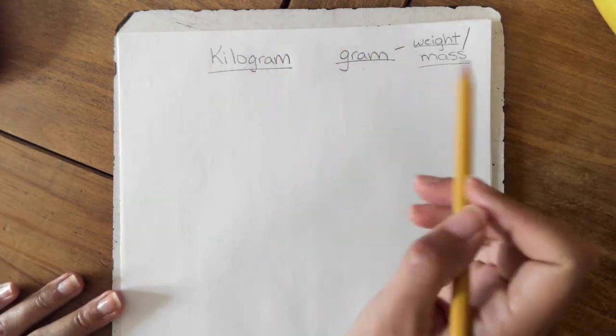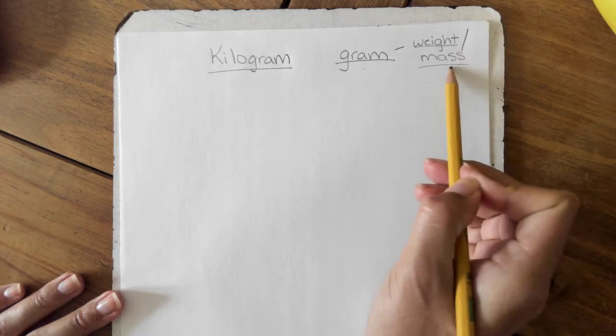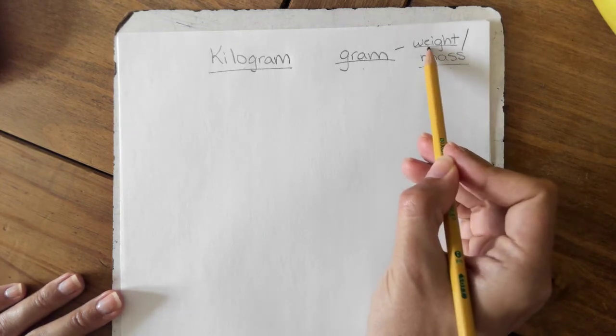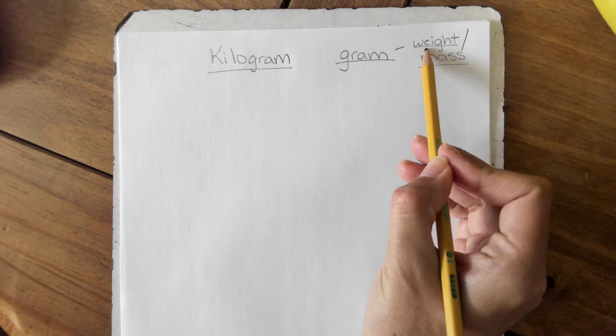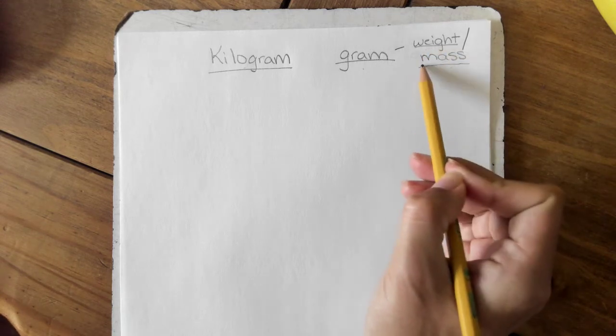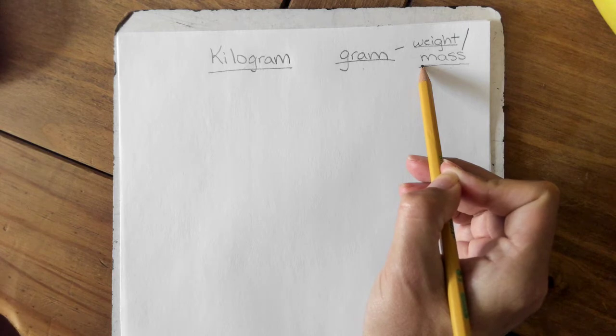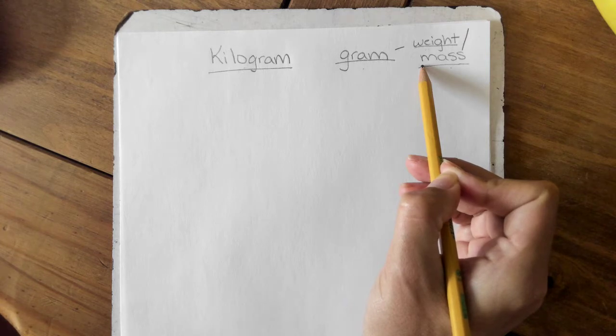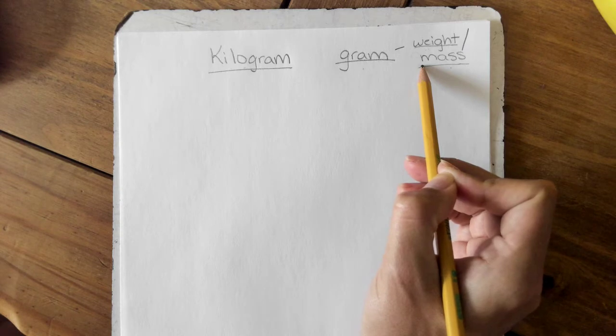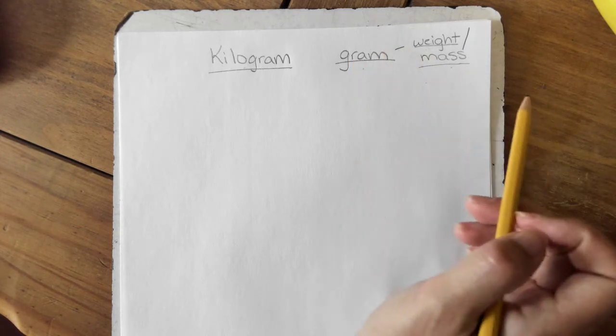What these two measure is weight and mass. Weight is a term we use often to describe how heavy something is. Mass is another term mostly used in science to describe how much matter something is made up of. Matter is something that everything is made of, and that's what you would be calculating or measuring when you are using grams and kilograms.